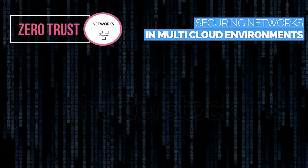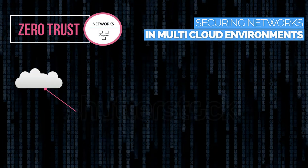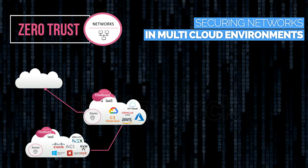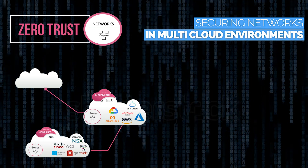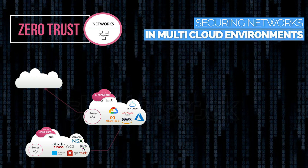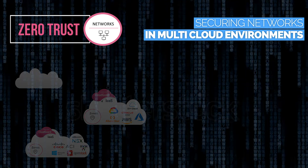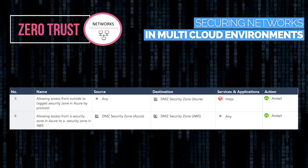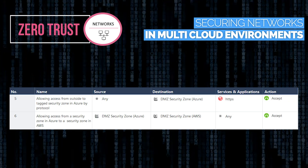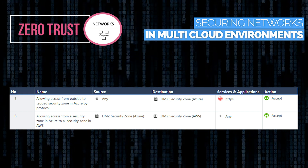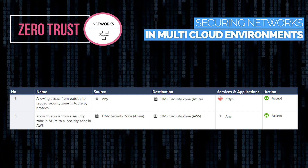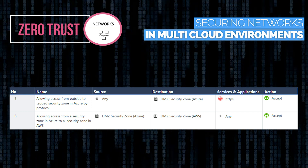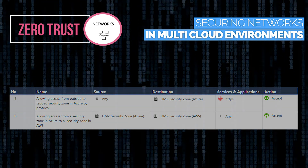Zero trust networks is about segmenting your network to protect internal assets from malicious lateral movement. The security rules restrict access to our DMZ security zone in Microsoft Azure only through HTTPS protocol, and create access between this zone to our DMZ security zone in AWS.